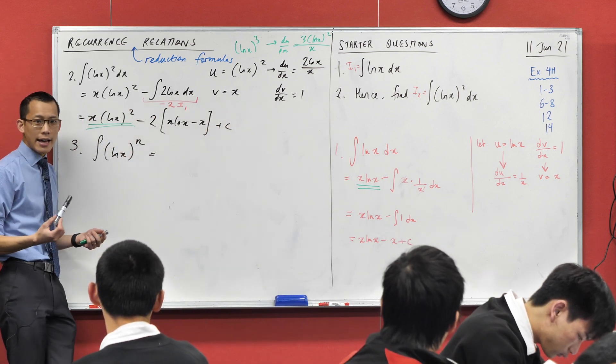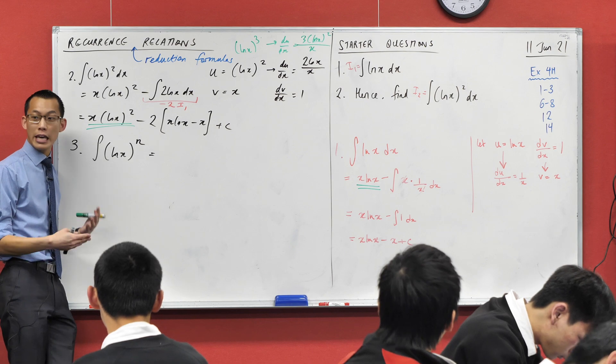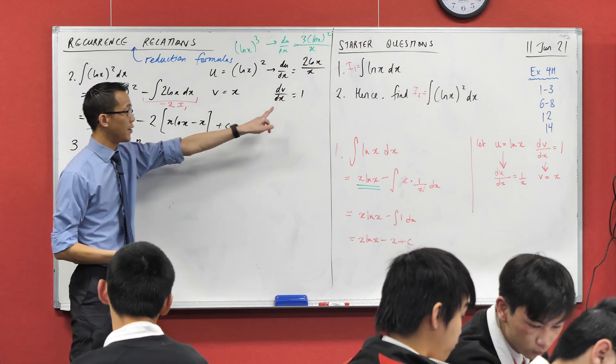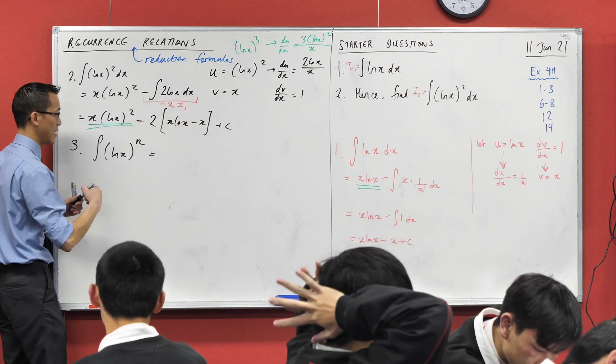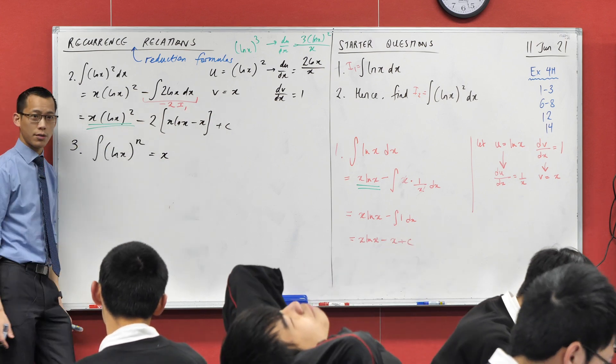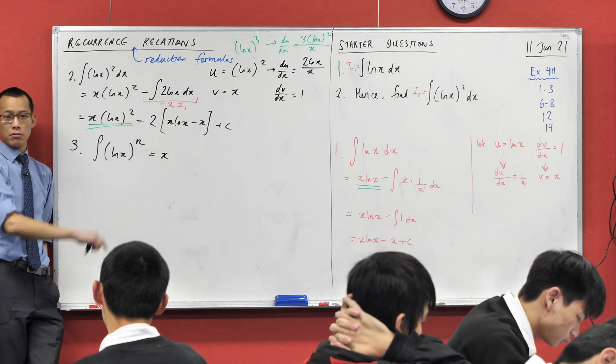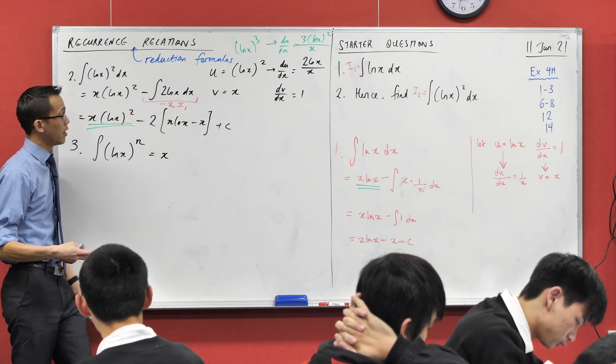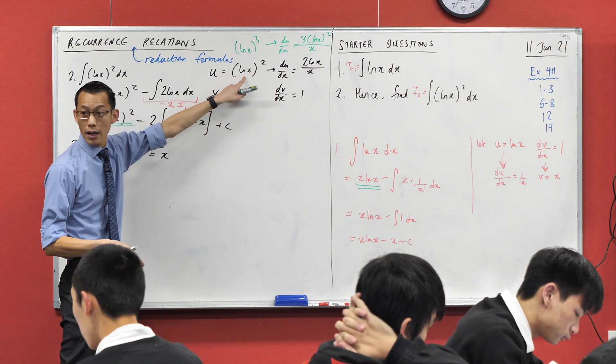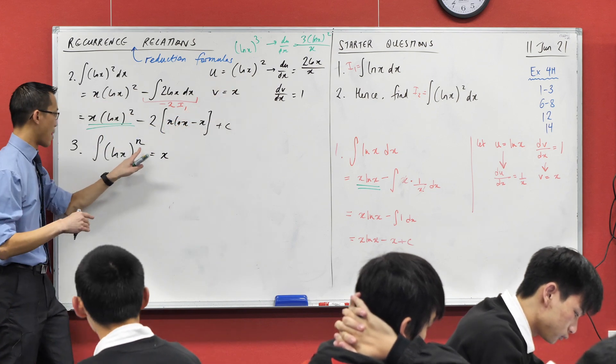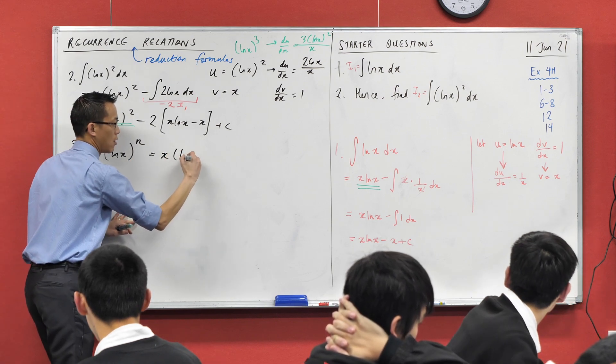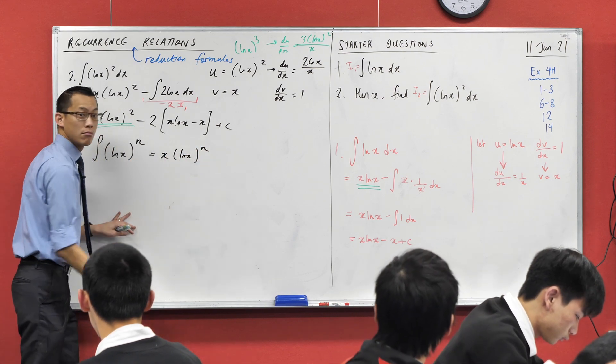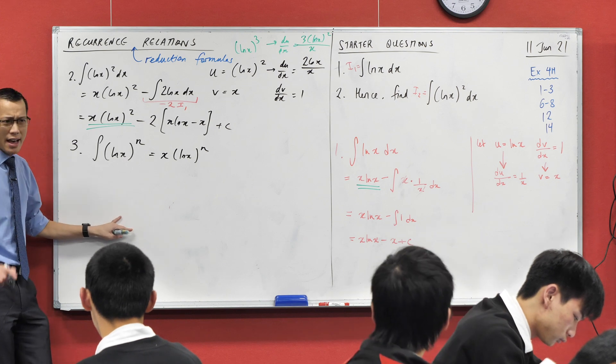Let's see if we can identify some pattern. Here's the UV that we got the second time, here's the UV that we got the first time. What do you see that's consistent? Well the x is there because we keep on consistently choosing dv is 1, and so you get your v as x. So I'm going to go ahead and put that down.